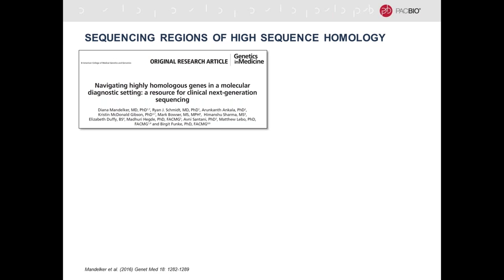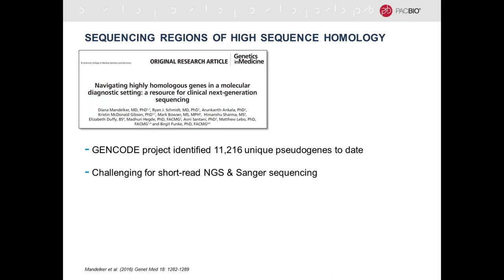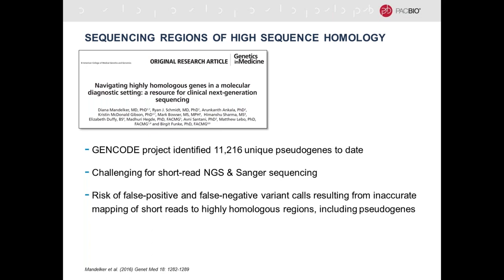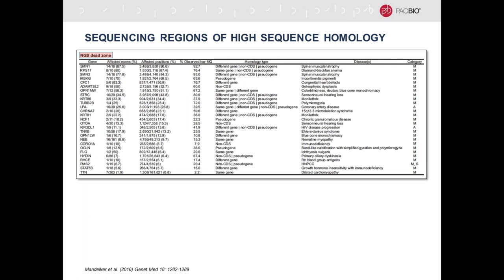The GENCO project identified well over 10,000 unique pseudogenes to date. Pseudogenes tend to be challenging for short-read NGS and even Sanger sequencing because of their high similarity to the corresponding gene, creating a risk of false positive or false negative variant calls resulting from inaccurate mapping of short reads to highly homologous regions. In this review paper, there are tables calling out 'NGS dead zone' genes linked to known diseases that are very difficult or impossible to address with NGS—many because they have pseudogenes. There are 193 medically relevant genes in the so-called NGS problem list from this paper.